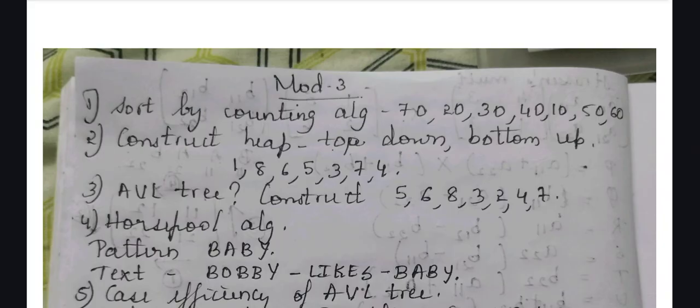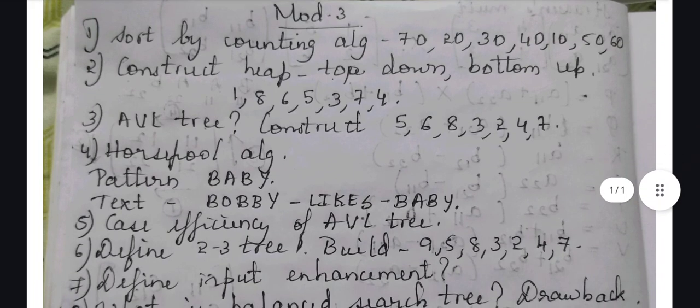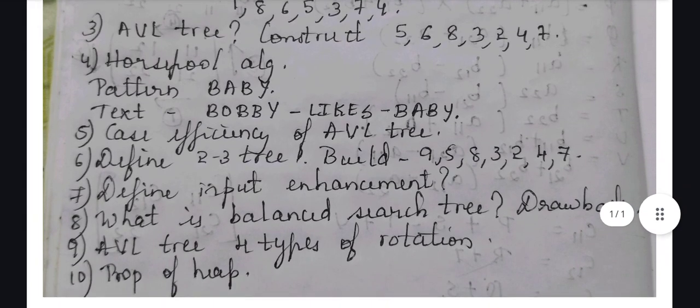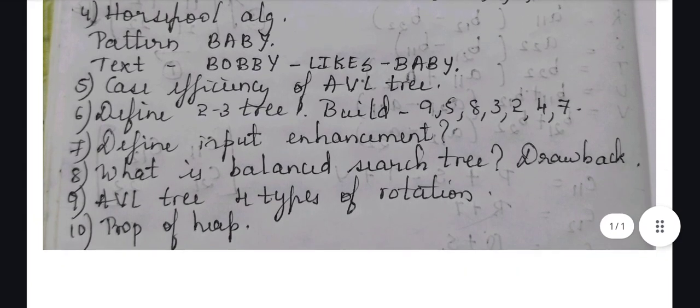Coming to the AVL tree - your definition, then you have to know the constructions. You may ask like there are four types of constructions regarding it. I have given it in the ninth question. So when they tell you to explain four types of rotation, you have to take your own example and explain it.